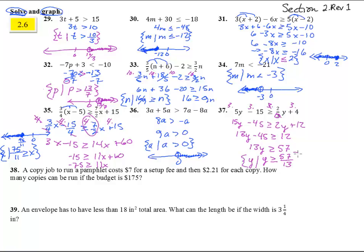Make it look nice here. And then as a graph, there's 0. There's 57 thirteenths. Looks like it's just a little bit bigger than 4. And circle go this way. Do we fill in the circle? Yes, it's equal to. So, we fill in that circle.